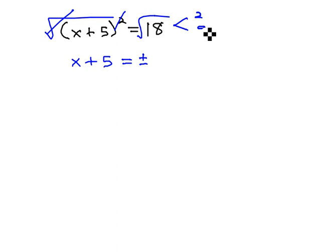And 18 is 2 times 9, 9 is 3 times 3, so we can pull a 3 out of the radical and leave a 2 inside the radical.